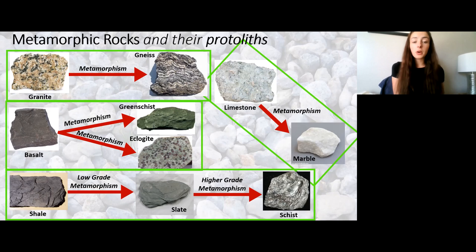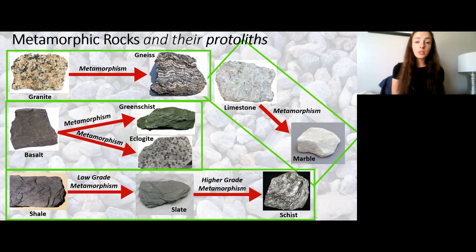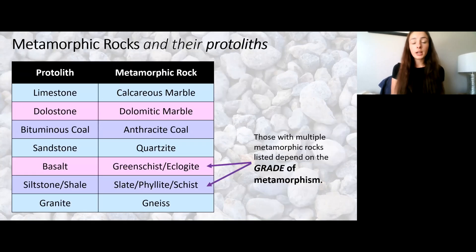Low-grade metamorphism, or less intense metamorphism, will cause shale to form slate, and then further or more intense metamorphism — or for a longer duration — slate will then form schist.